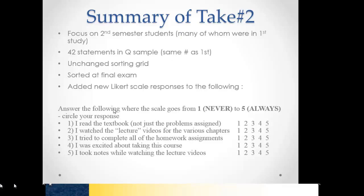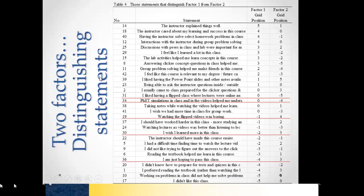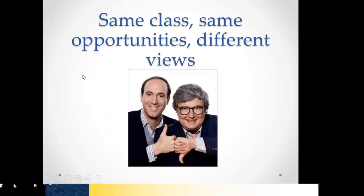I also asked students supplemental questions like how often they read the textbook and watched the lecture videos, rated one to five. I ended up with two distinguishing factors. Factor one was kind of neutral about liking the flipped class with online lectures. Factor two did not like that. On simulations helping understanding, factor one was neutral while factor two really didn't like that. On just hoping to pass the class, factor one disagreed while factor two showed at least some agreement — so again they're just hoping to pass.